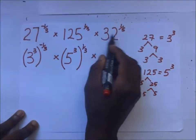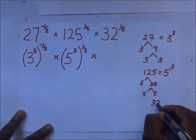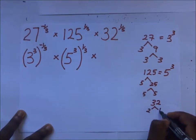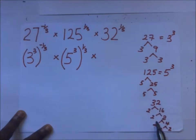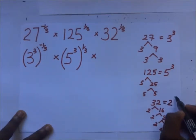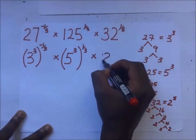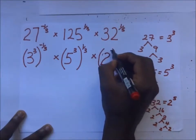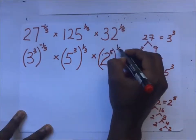Multiplied by 32. Likewise we factorize 32: by 2 gives 16, by 2 gives 8, by 2 gives 4, by 2 gives 2 — that's five 2s — so 32 is the same as 2 to the power 5. So this 32 becomes 2 to the power 5, all to the power 1 over 5.